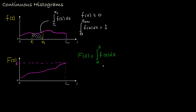That's one relationship. The other relationship: if we take the derivative of the cumulative frequency with respect to intensity, that's going to be equal to the frequency histogram, or normalized histogram, at that intensity. So those two relationships tell us how the frequency histogram is related to the cumulative frequency.